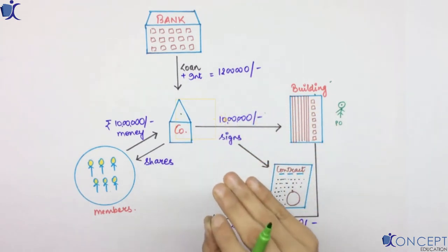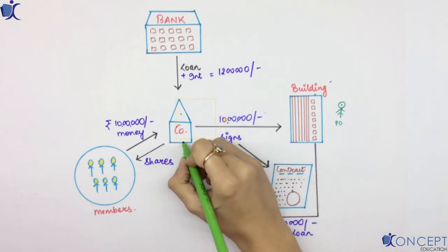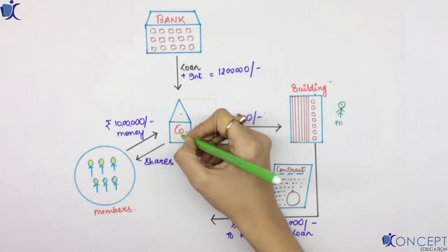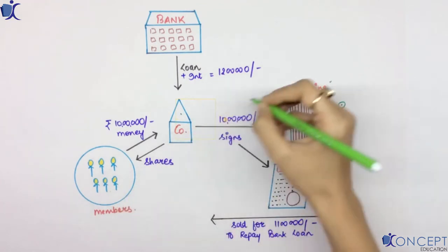Now let's read this thing very slowly. Company is now the owner of the building. Members is the owner of the company. Will members also become the owner of the building?